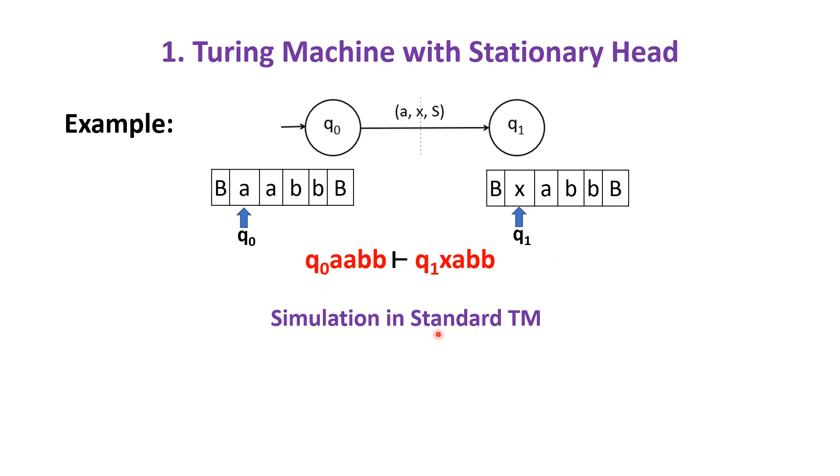The same can also be simulated by using our standard Turing machine with two moves. Initially, the Turing machine is at q0 pointing to A. In the next move, change the state from q0 to some intermediate state q2, A as x, and move towards the right.